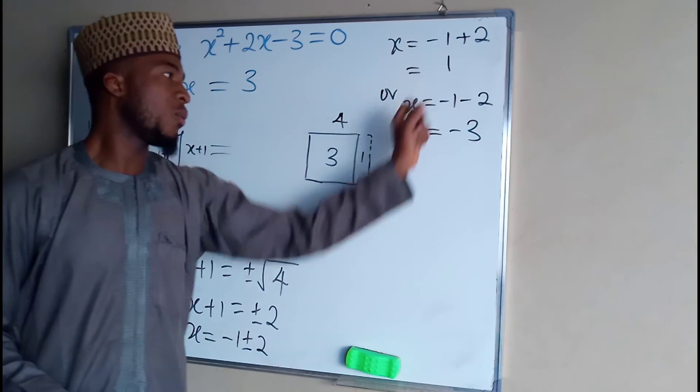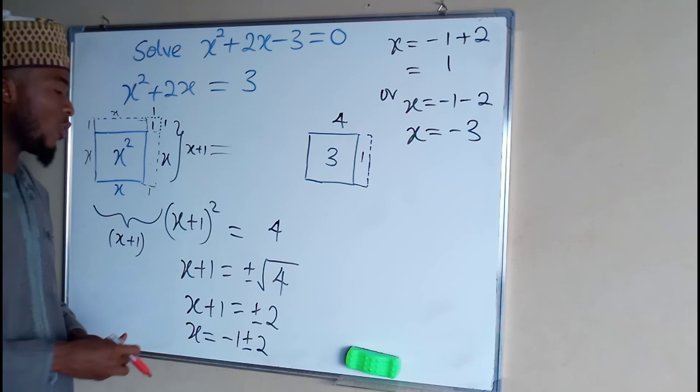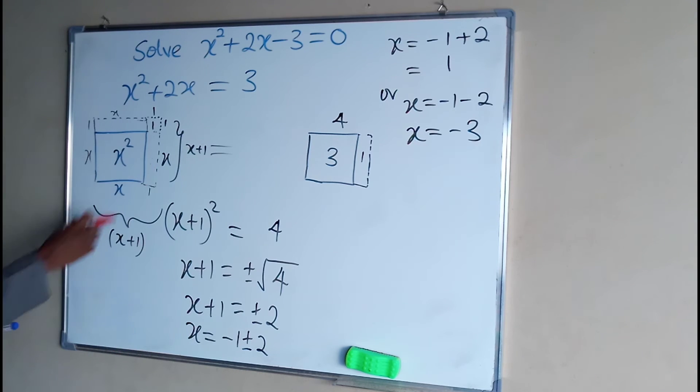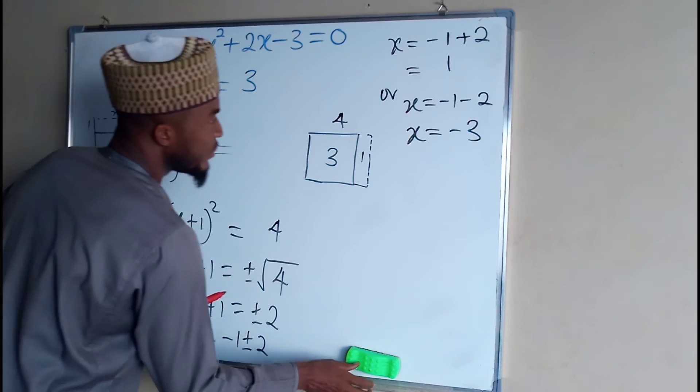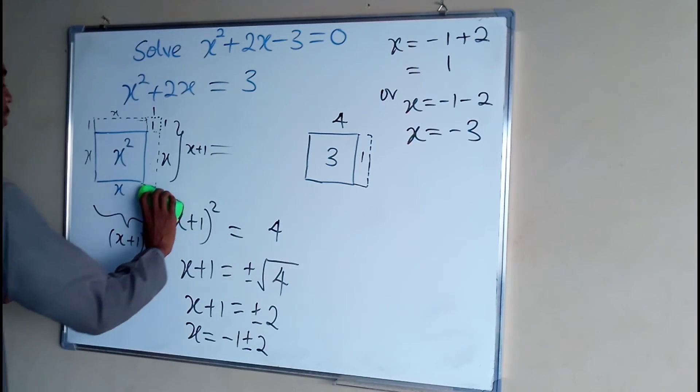Either 1 or minus 3 can be the real value of this x, which is unknown before. But now we have found the real value. So let me bring the values back.